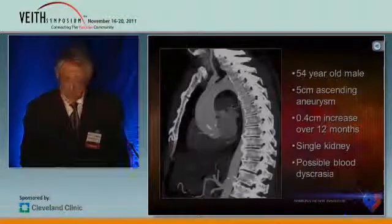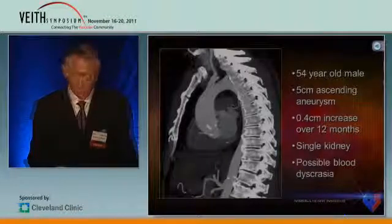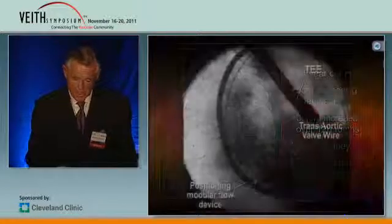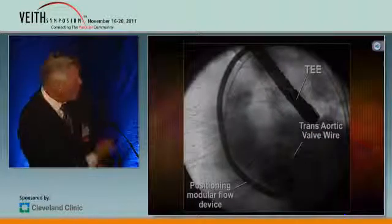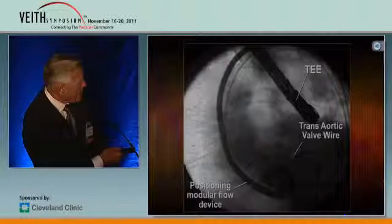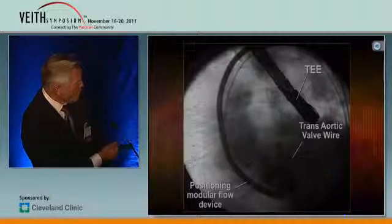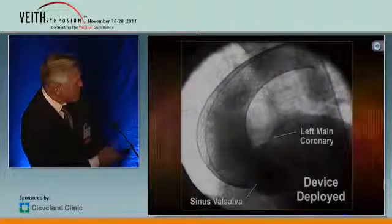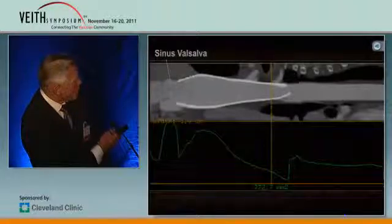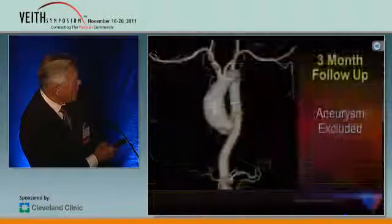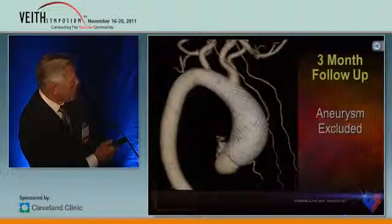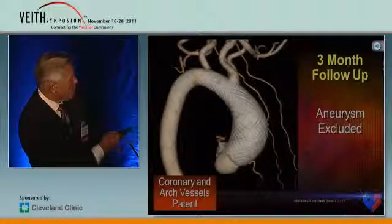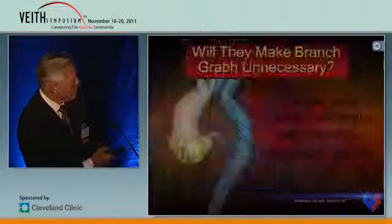This is the first case, done three months ago. A 54-year-old gentleman with an enlarging aneurysm of the ascending aorta, a single kidney, had some blood dyscrasias, and was not a good candidate for open surgery. So we went to Italy, and here it is on the table. The wire is passed across the valve into the ventricle under TEE control. Here is the multilayer stent at the time of delivery right at the sinuses of Valsalva. You can see what it looked like in the reconstruction a day later. On Monday of this last week, the patient came for his three-month study. The coronary arteries are wide open, the graft is across in position, and the aneurysm is excluded.